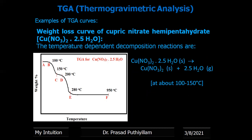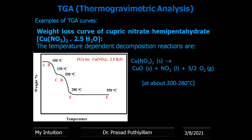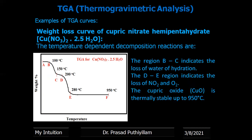Another example is cupric nitrate hemi-pentahydrate Cu(NO₃)₂·2.5H₂O. At around 100 to 150 degrees Celsius it loses the water of hydration to become anhydrous Cu(NO₃)₂. Then Cu(NO₃)₂ is converted to CuO (cupric oxide) with removal of NO₂ and ½O₂ at around 200 to 280 degrees Celsius. Region BC indicates the loss of water of hydration, region DE indicates the loss of NO₂ and oxygen gas, and cupric oxide CuO is thermally stable up to 950 degrees Celsius.